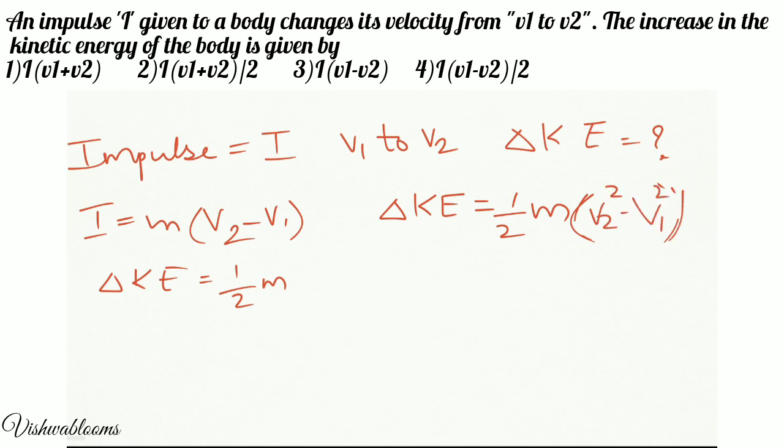Now it is in the form of A squared minus B squared. So I am going to write it as A plus B into A minus B. So V2 minus V1 into V2 plus V1.